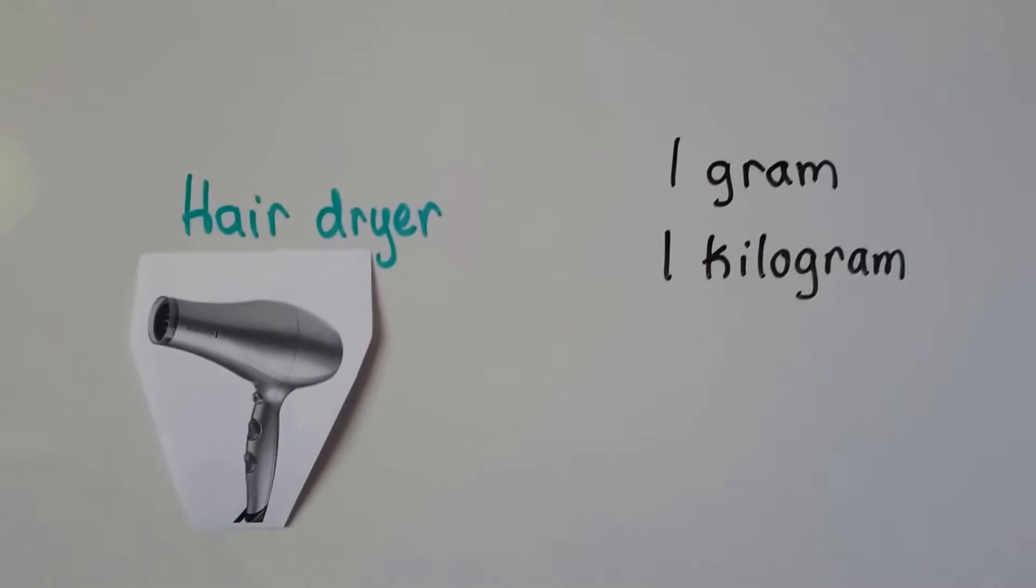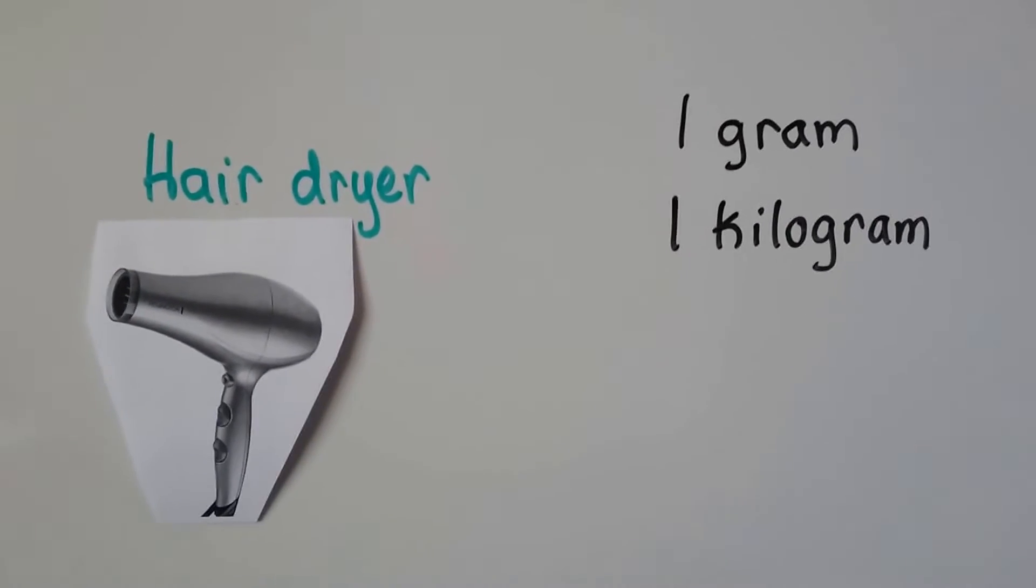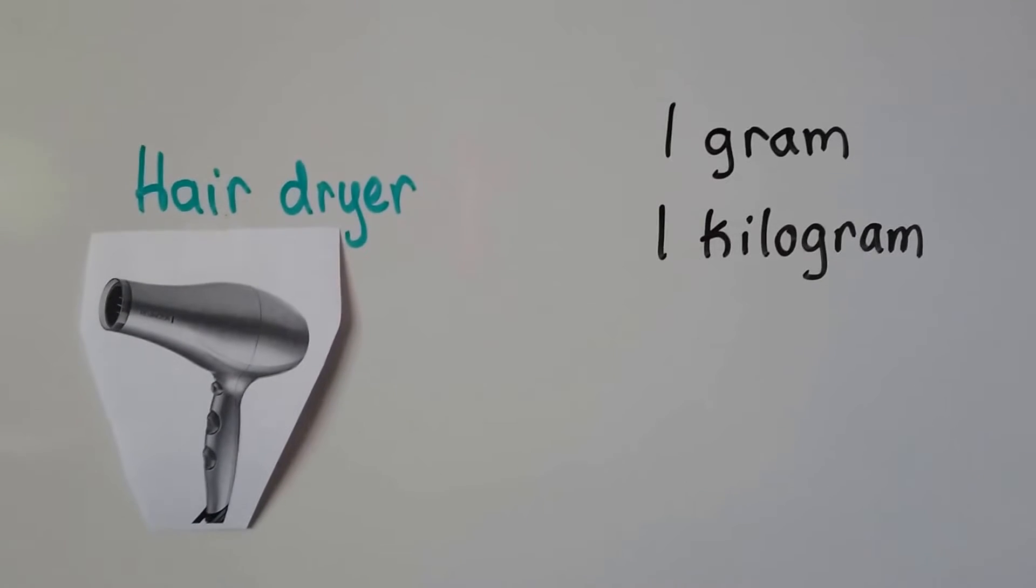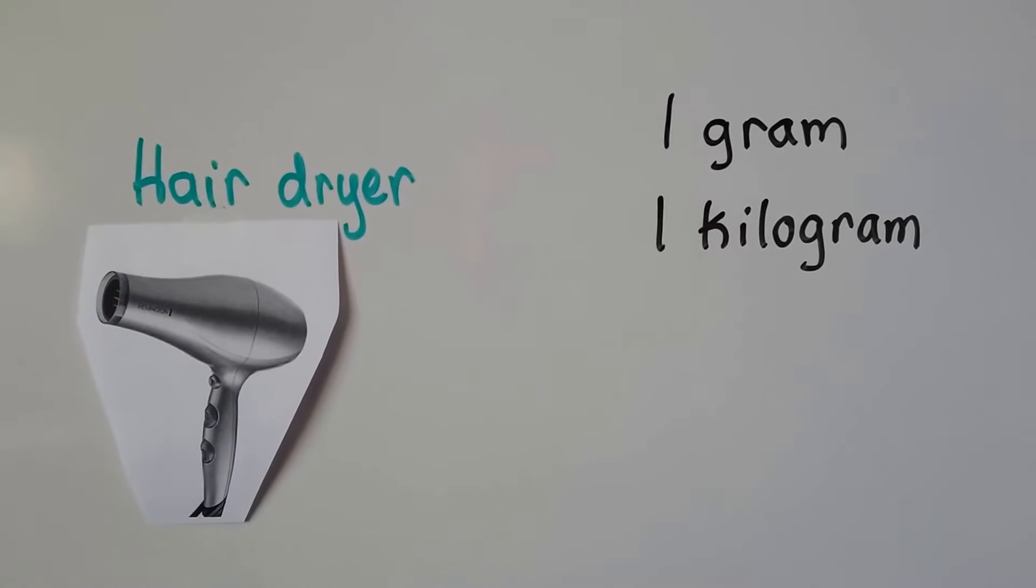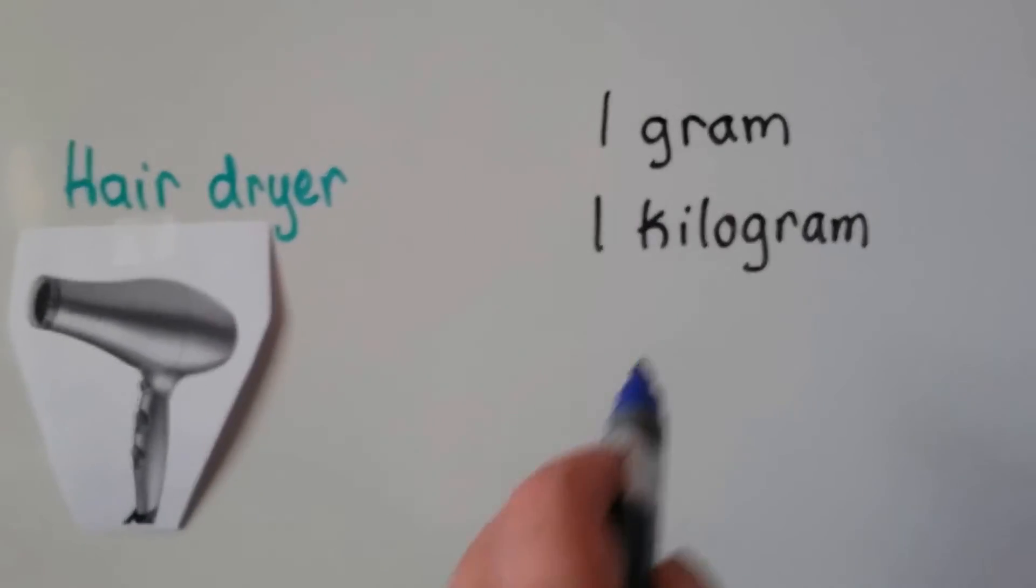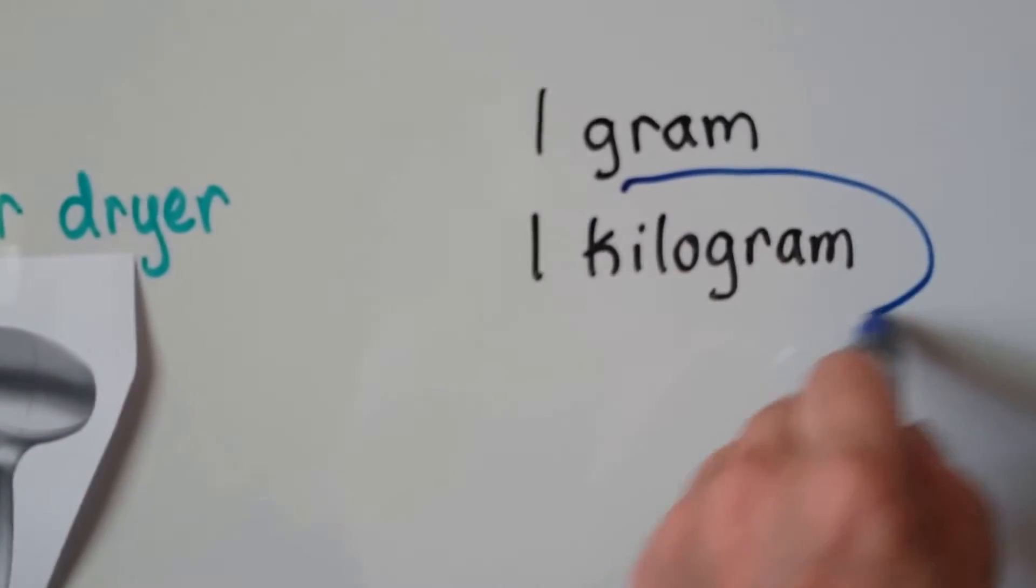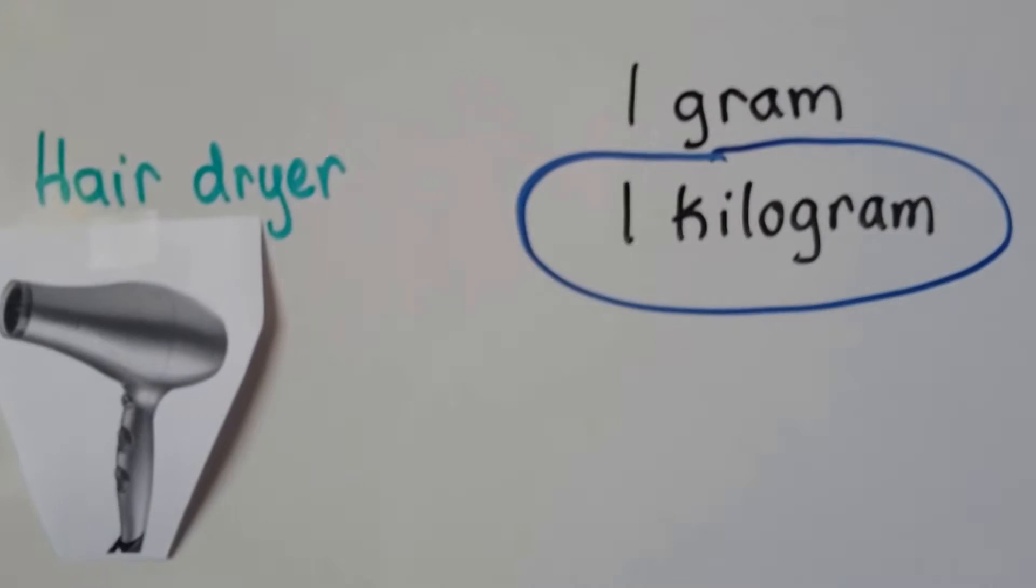What about a hair dryer? Do you think a hair dryer, a blow dryer, weighs about one gram or one kilogram? Well, if you said one kilogram, you're right. A hair dryer can weigh about as much as a hammer, can't it? And that would be one kilogram.